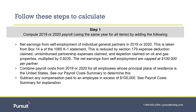From there, you will take this number and multiply it by 0.9235. This number will be the self-employment earnings that can be included in the calculation. Again, the net earnings figure is capped at $100,000. So if the number you calculate here is above that, the maximum that can be used will be $100,000.